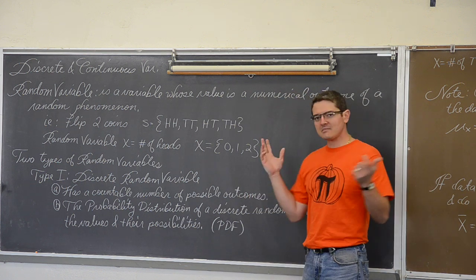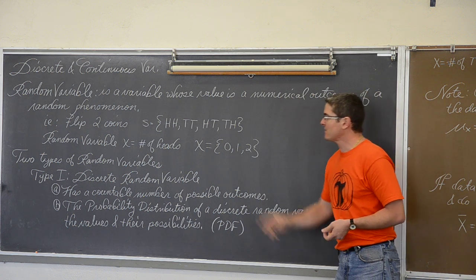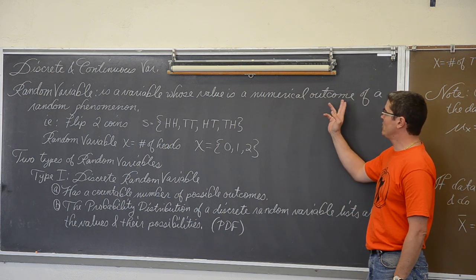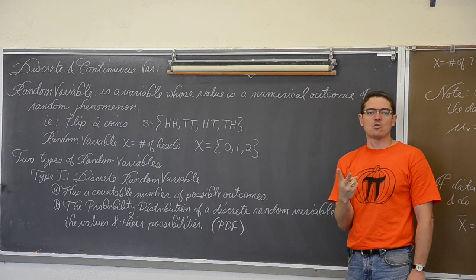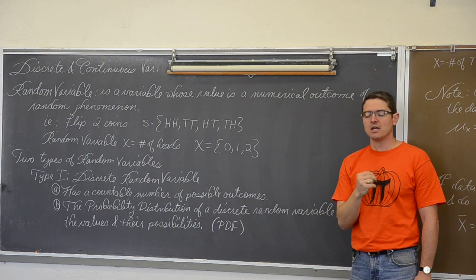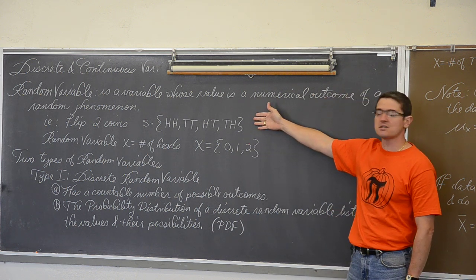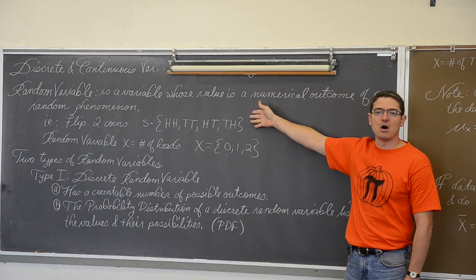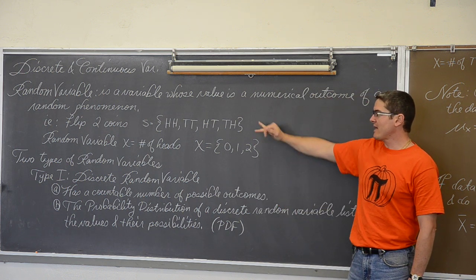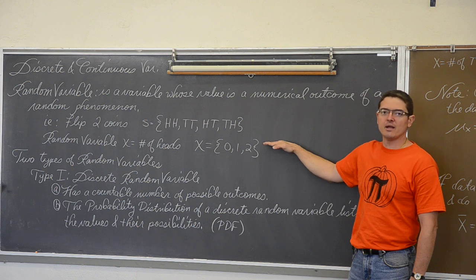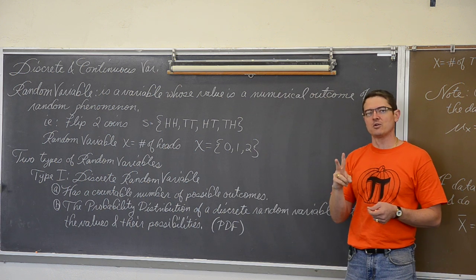So, discrete and continuous random variables. A random variable is a variable whose value is a numerical outcome of a random phenomenon. For example, if you flip two coins, each one has two outcomes — heads or tails — giving two times two, or four different combinations listed in our sample space. Now that sample space itself is not a random variable. We define a random variable as whatever interest we are looking at — in this case, we are going to count the number of heads when we flip our two coins.